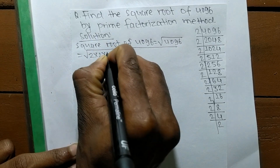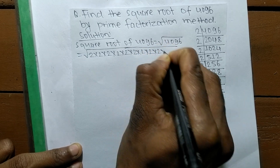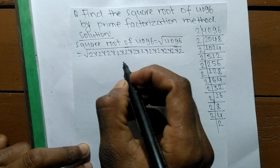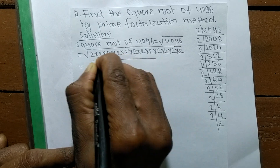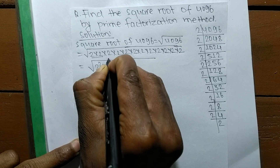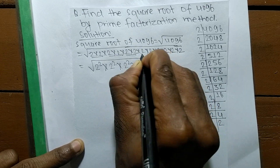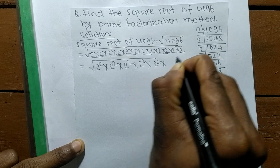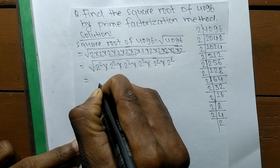So we have 2 written 12 times: 1, 2, 3, 4, 5, 6, 7, 8, 9, 10, 11, 12 twos. Since we are finding the square root, we make pairs (squares) of these prime factors: 2 times 2 is 2 squared, 2 times 2 is 2 squared, and so on for all six pairs.